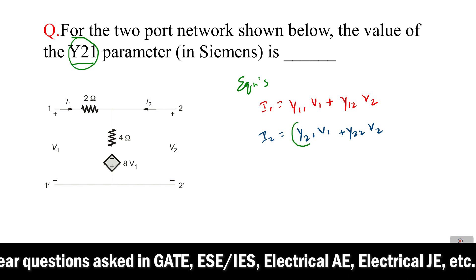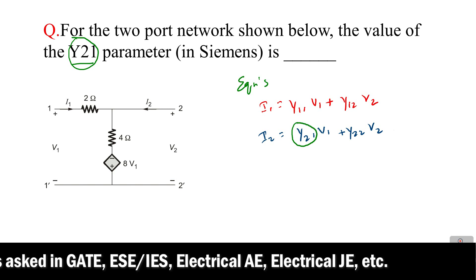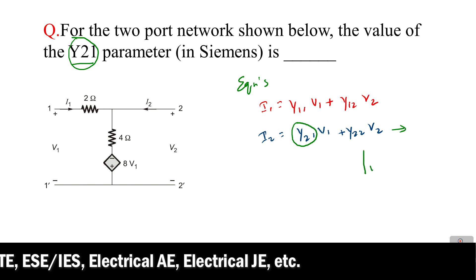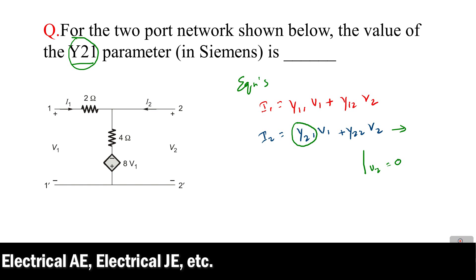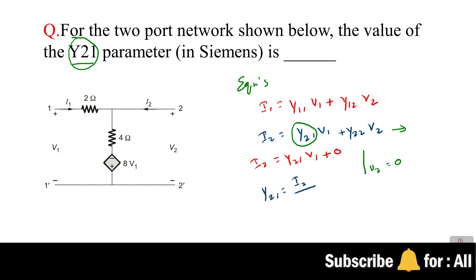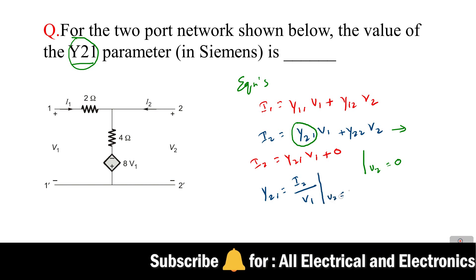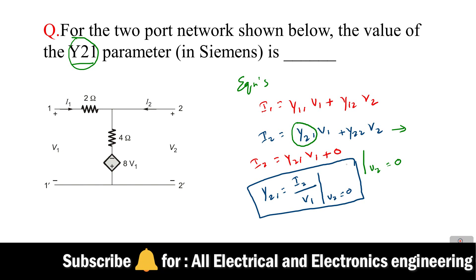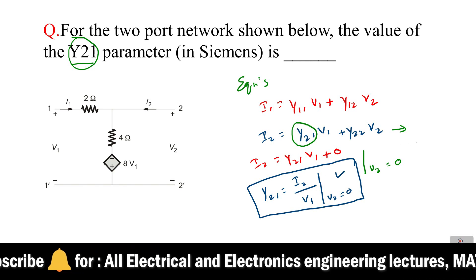For this equation, if you take v2 equal to 0, then it will be i2 equals Y21 v1 plus 0. So finally you will get Y21 equals i2 by v1 when v2 equals 0. So we need to find out this parameter.